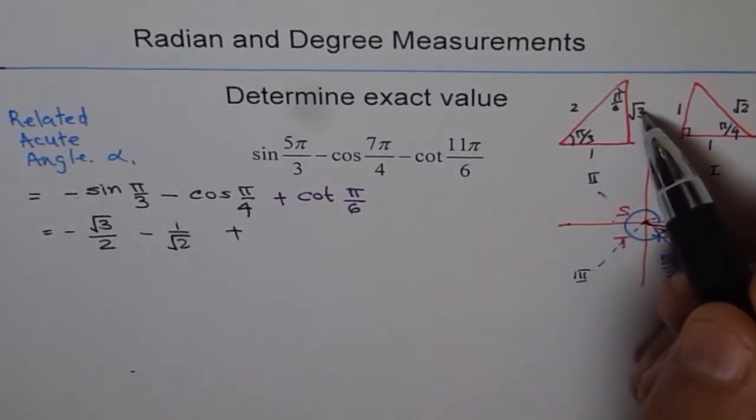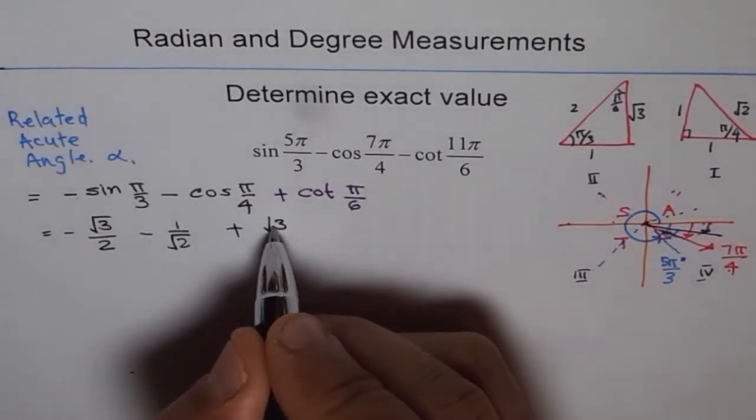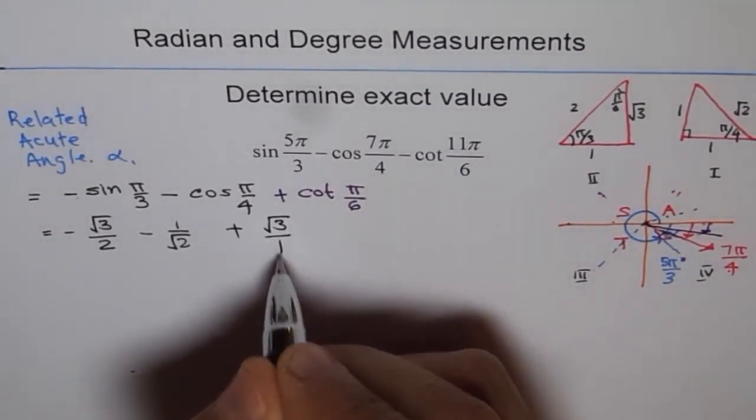π/4 is adjacent over hypotenuse which is 1 over square root 2, plus cotangent π/6. Tangent is opposite over adjacent, cotangent will be reversed. That means square root 3 over 1, so I will write plus square root 3 over 1.